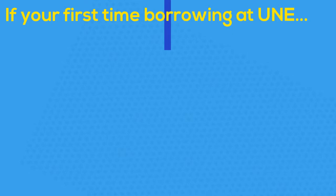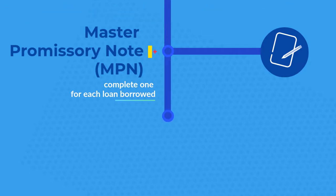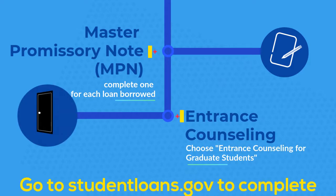If this is your first time borrowing loans at UNE, you'll need to complete a master promissory note for each loan, if more than one, and then complete one entrance counseling for graduate students found at studentloans.gov.